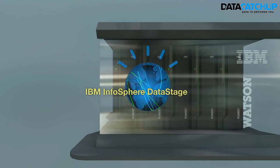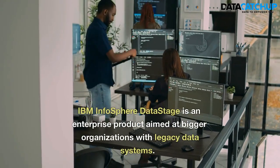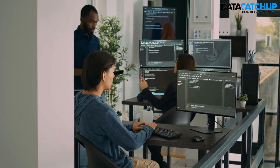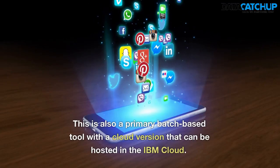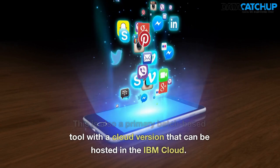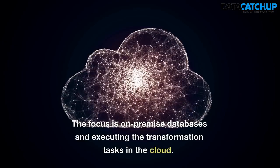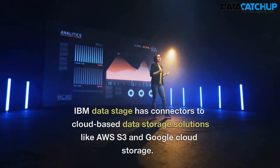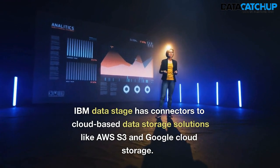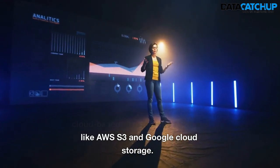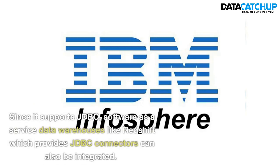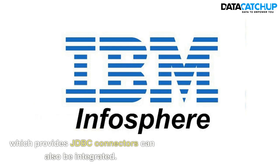IBM Infosphere Data Stage is an enterprise product aimed at bigger organizations with legacy data systems. This is also a primary batch-based tool with a cloud version that can be hosted in the IBM cloud. The focus is on on-premise databases and executing the transformation tasks in the cloud. IBM Data Stage has connectors to cloud-based data storage solutions like AWS S3 and Google Cloud Storage. Since it supports JDBC, software as a service data warehouses like Redshift which provides JDBC connectors can also be integrated.